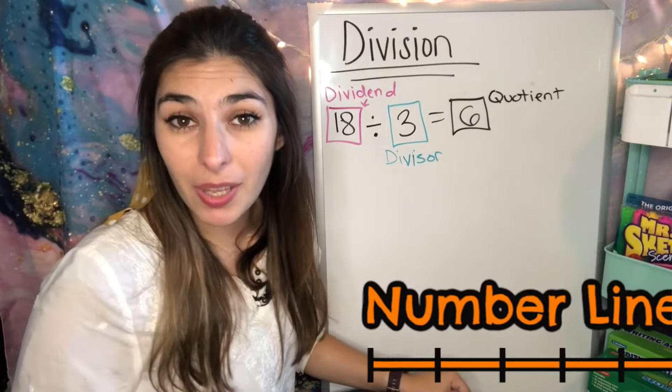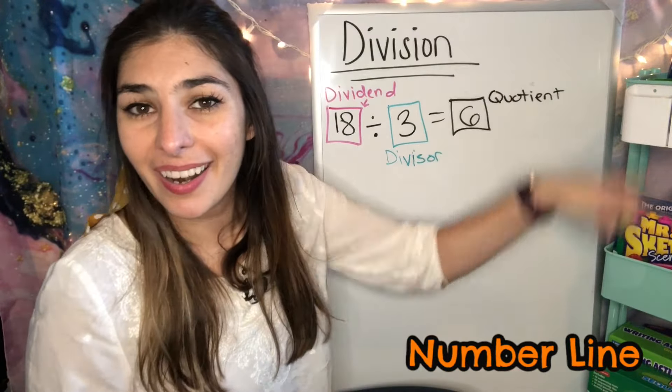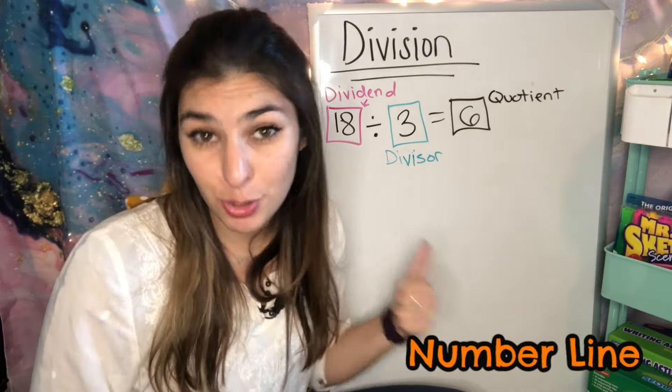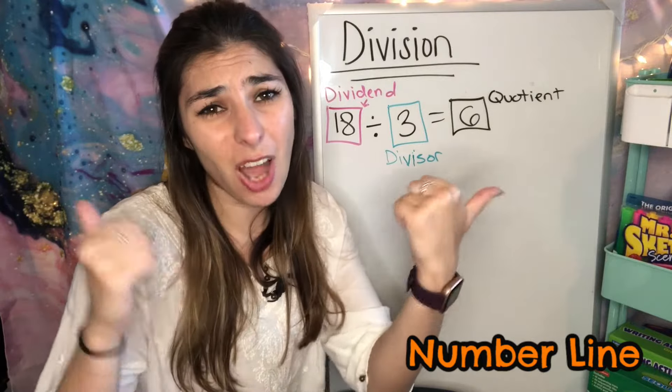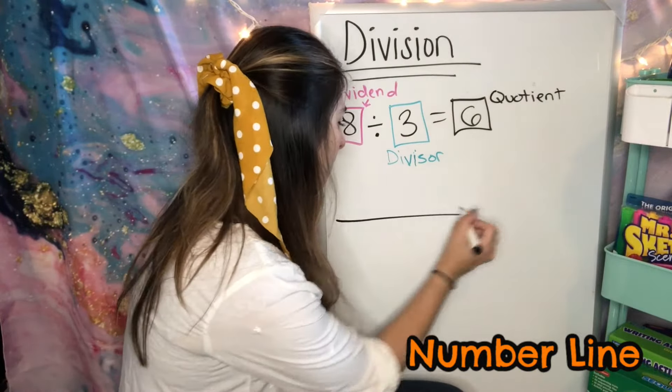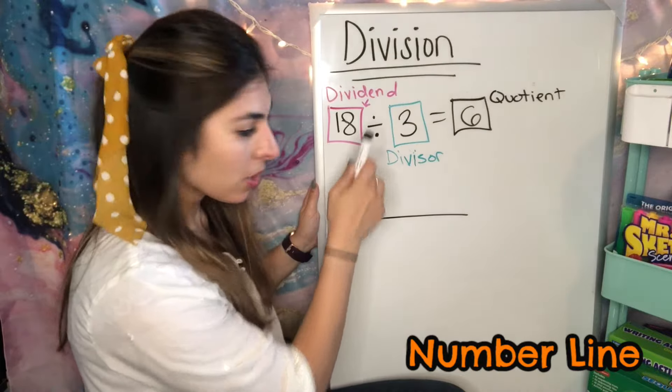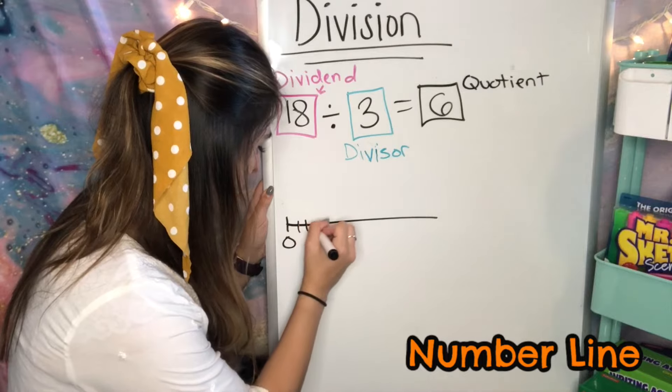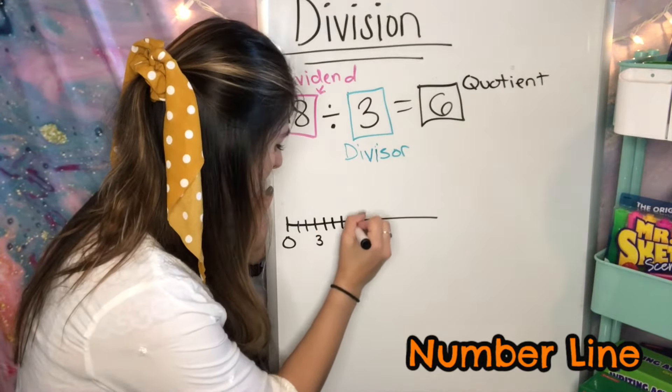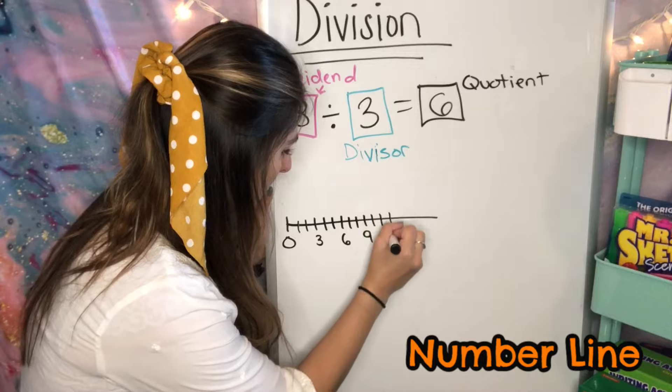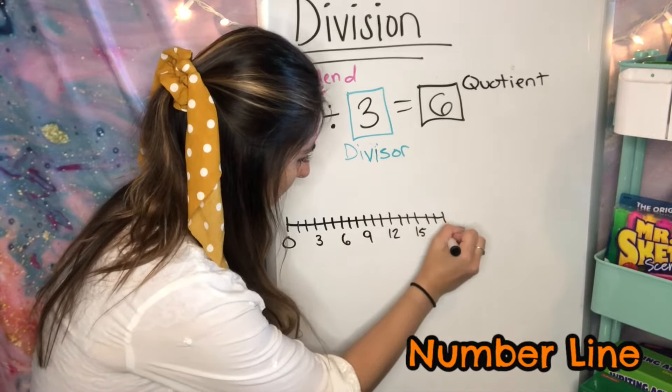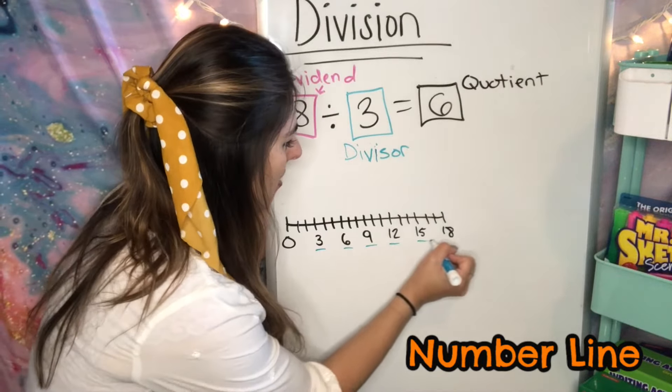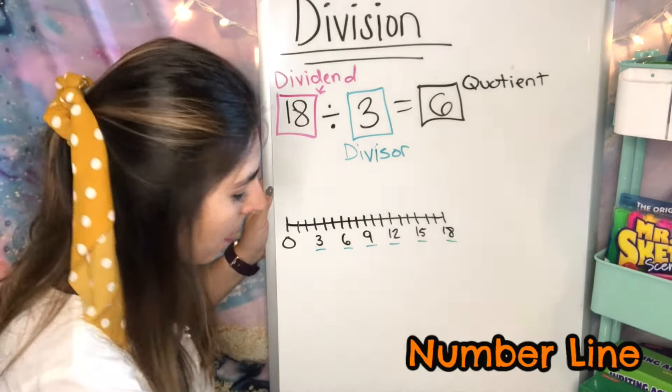Next strategy is number line. If you've seen my multiplication video, this is going to line up really well with those strategies because we're just doing the division version of those strategies. Because multiplication and division, they're just opposites. I have my number line. I start at 0, I need to get to 18. So I'm going to count by 3's in order to get there. 1, 2, 3, 4, 5, 6, 7, 8, 9, 10, 11, 12, 13, 14, 15, 16, 17, 18. So because I counted by 3's, that's these numbers. This is my divisor.